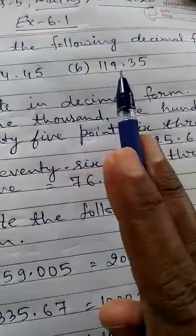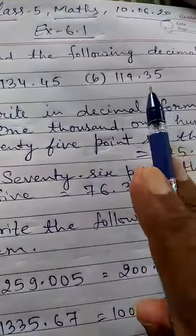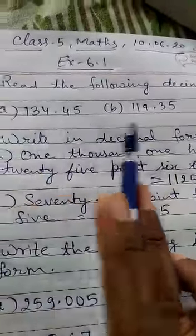Now this you read as 119.35 - one hundred nineteen point three five. In this way you will read the decimal numbers.